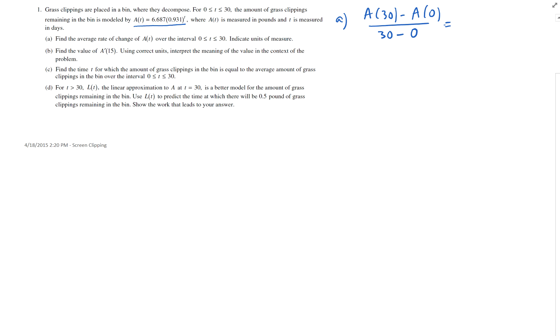And if you do those calculations, since this is a calculator question, you just plug 30 and zero into the equation for A of T and you get negative 1.97 pounds per day. So you get one point for the answer with units. In a problem like this, since they give you a context problem, you've got to have the units.